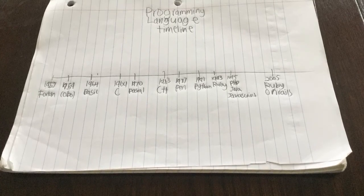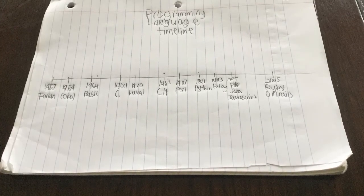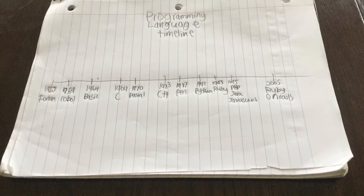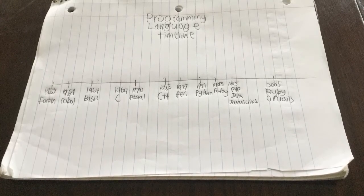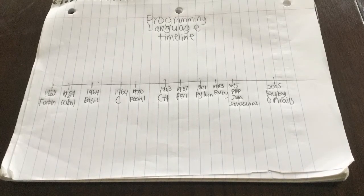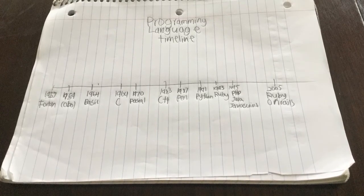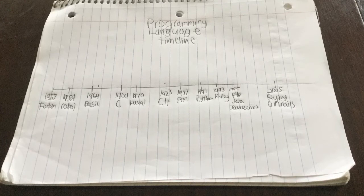In 1970, Pascal was created. In 1983, C++ was created. In 1987, Perl was created. In 1991, Python was created. In 1993, Ruby was created.